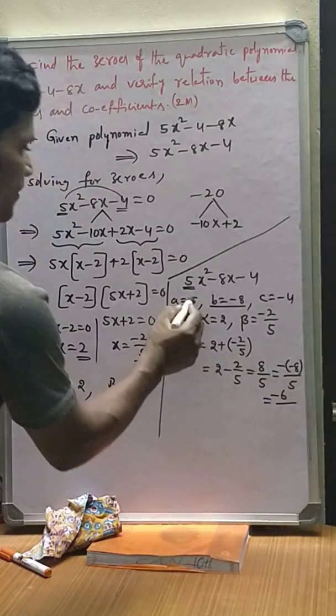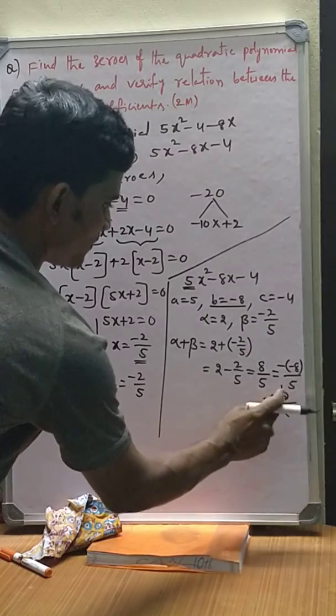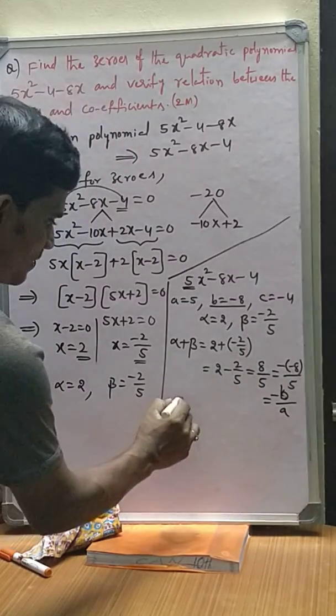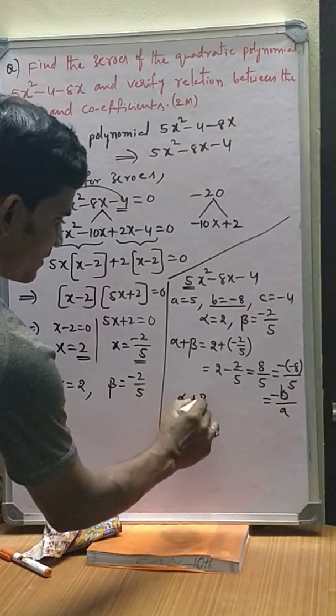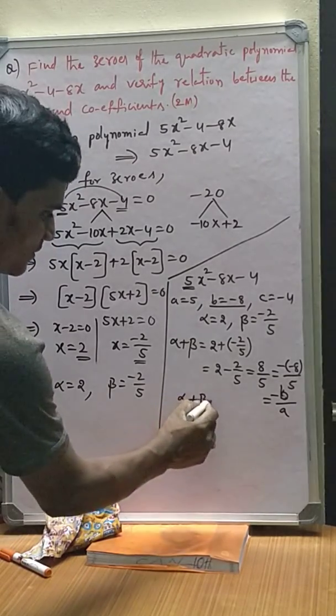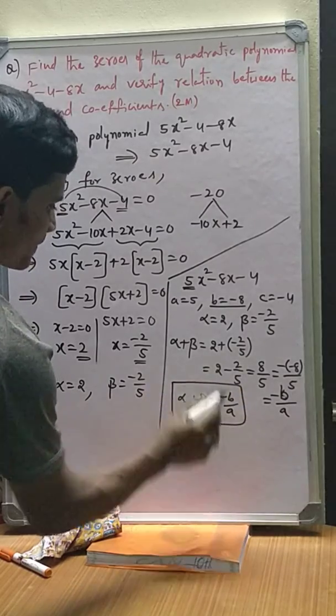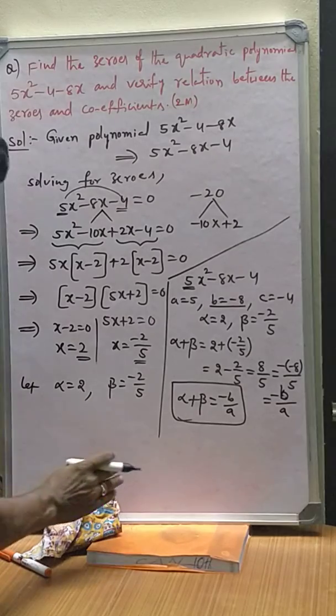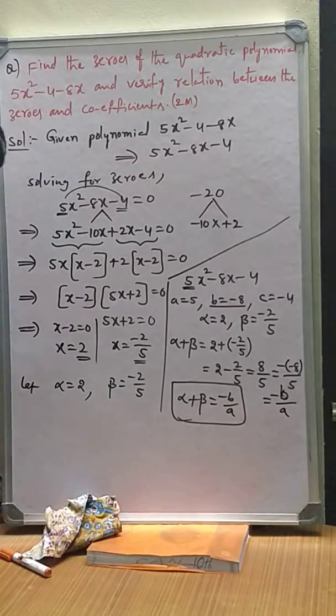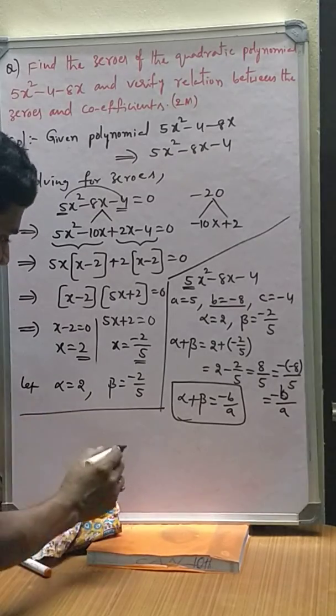So, from this what we can conclude: the relation between zeros—sum of the zeros is equal to -b/a. And one more relation we have to prove. What is the product of zeros?